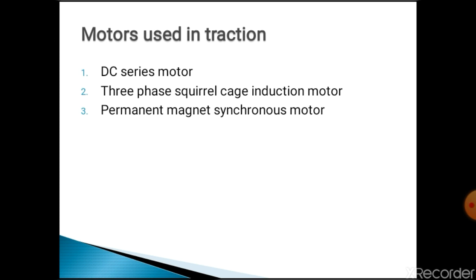The DC series motor is used for suburban railways. The three-phase squirrel cage induction motor is the simplest in construction and robust in nature; it is used for speed control of the locomotive. The permanent magnet synchronous motor is used as a traction motor for electric and road vehicles because of its robustness, simplest construction, and easy speed control.